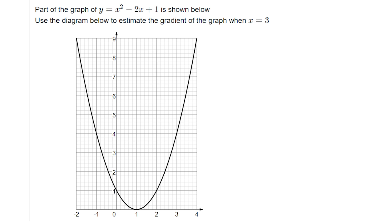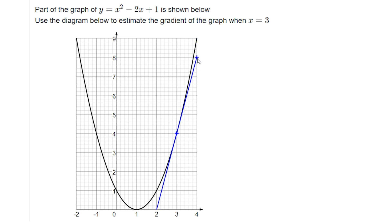We need to draw a straight line that is a tangent to that point - you could imagine it as a straight line balancing on that curve. If you're doing this with pen and paper, just use a ruler and draw that line in. If you're using the website, you click once on the point and then click a second time anywhere else to create the line. You can drag that point to adjust it until you're happy.